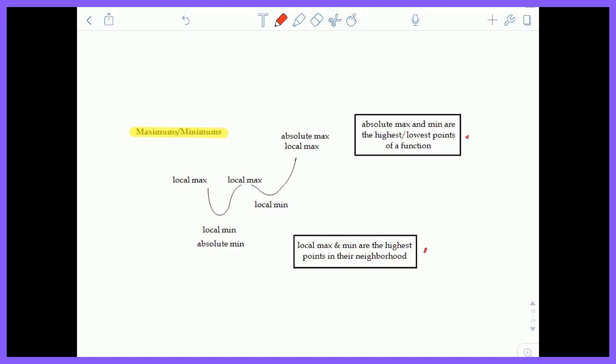Whereas a local max or a local min, local extrema, are in a neighborhood. So in a specific area, in an interval, do you have a value that's higher than the rest or lower than the rest? So that's kind of a brief overview.